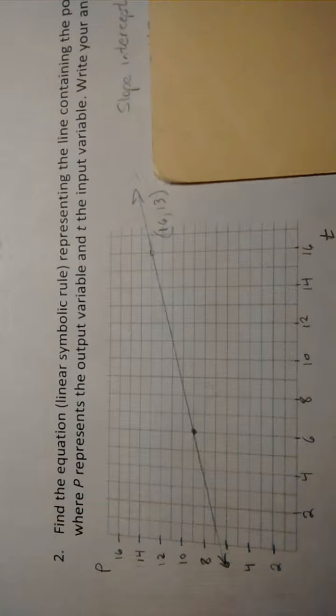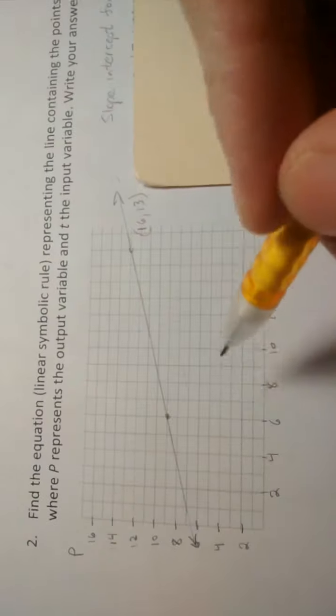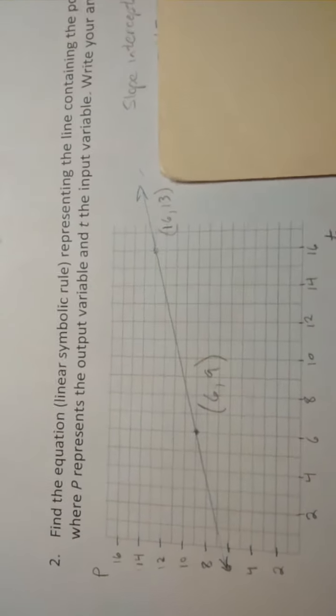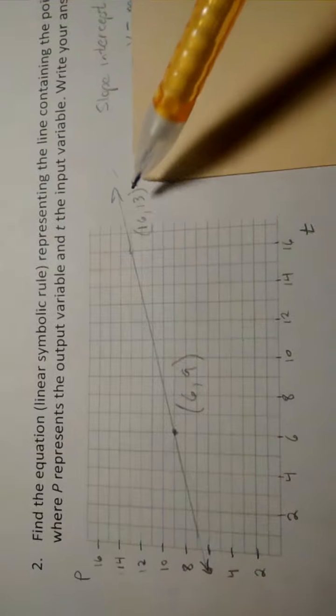All right, here's the line passing through the two points here, 6, 9, and 16, 13. Let me write this here. So 6, 9 is there, 16, 13 there.